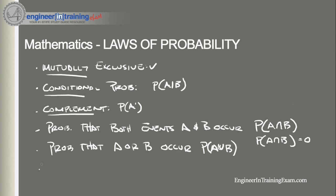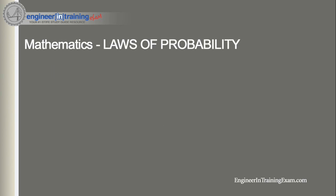The probability of an event occurring ranges from 0 to 1, and the sum of the probabilities of all possible events is equal to 1. Now that we have these definitions out of the way, let's start with the rule of subtraction.